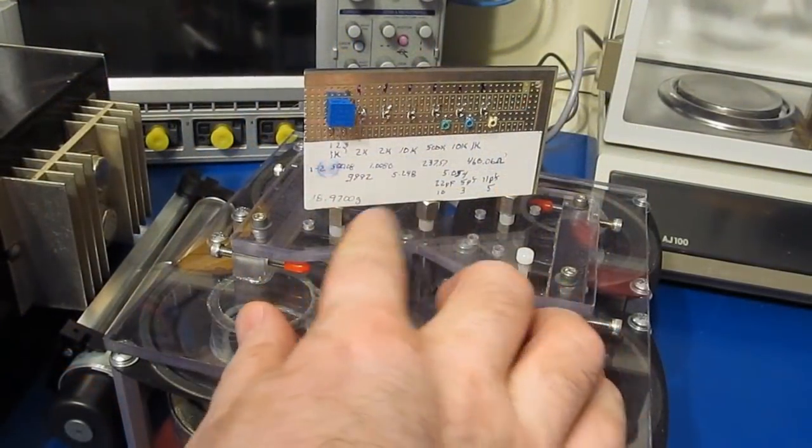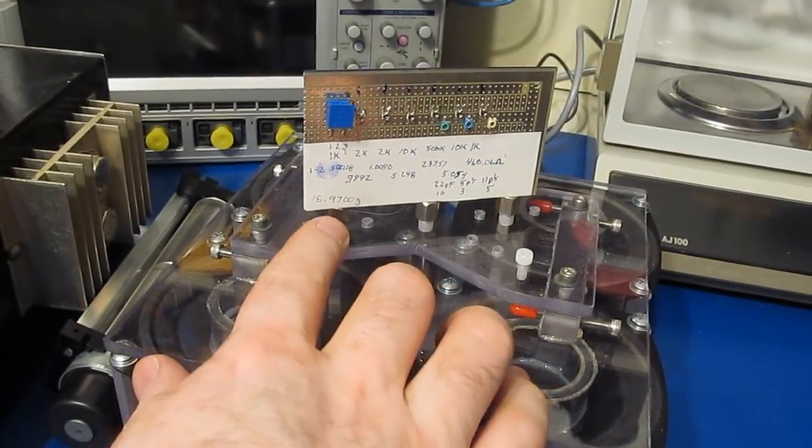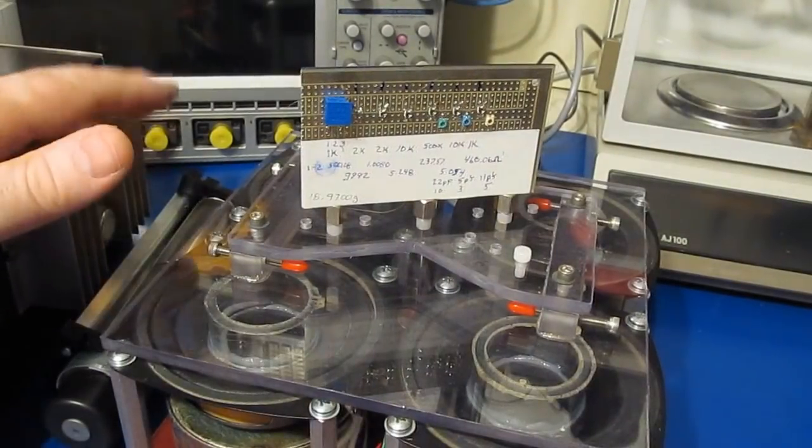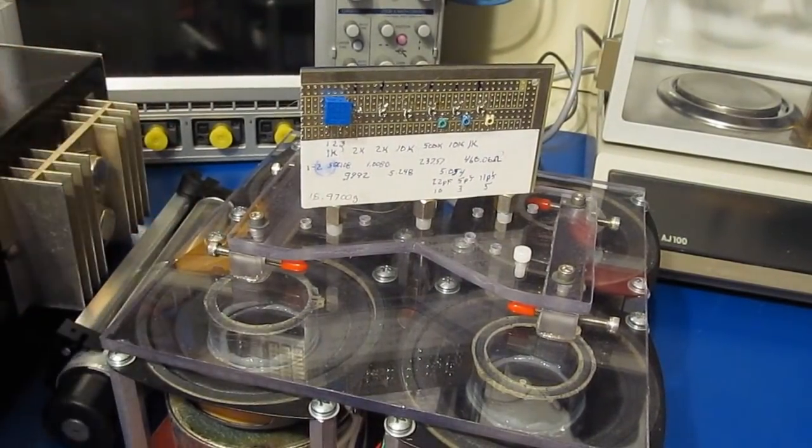I wanted to run this in the vertical axis as well. All I've done is I've mounted three standoffs and I've hot glued them to the back side of this perfboard.